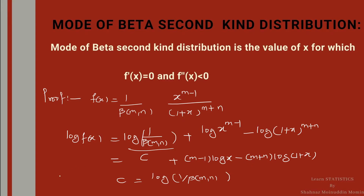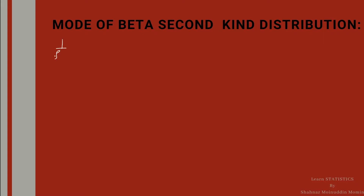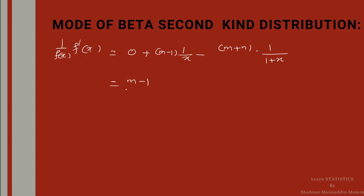Now we differentiate both sides with respect to x. Then we get: (1/f(x)) * f'(x) = 0 + (m-1) * (1/x) - (m+n) * (1/(1+x)). The derivative of log(1+x) is 1/(1+x), which gives (m-1)/x.